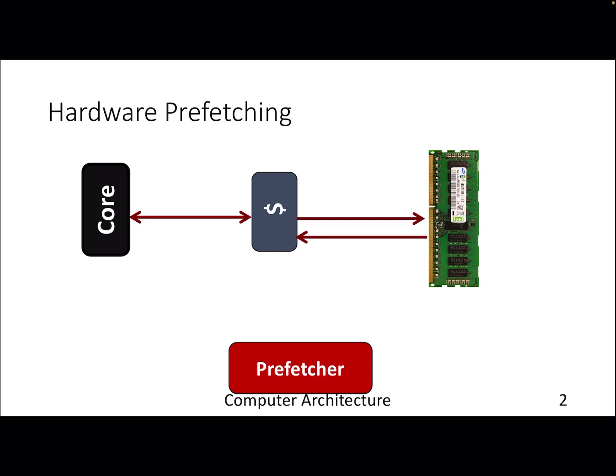We will have a prefetcher sitting beside a particular cache level. This prefetcher will probe all the accesses going to the caches and try to learn the future accesses. For example, if the processor is sending requests to address x, x+1, and x+2, it's a pretty simple and trivial access pattern that any prefetcher can predict or speculate about.